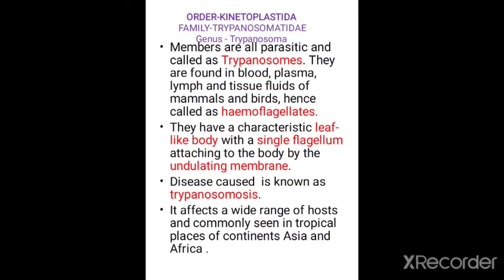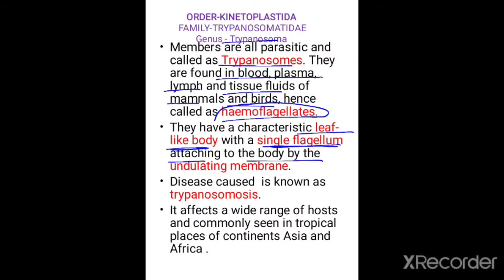Now let us start with Trypanosoma. The members are called Trypanosomes. They are hemoflagellates, meaning they are found in the blood plasma, lymph, and other tissue fluids of mammals and also in birds. They have a characteristic feature: their body is leaf-like with a single flagellum attaching to the body by an undulating membrane. The disease caused by Trypanosoma organisms is called Trypanosomosis.